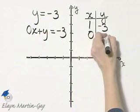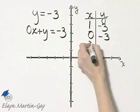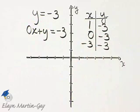So if x is 0, y is negative 3. If x is negative 3, y is negative 3.